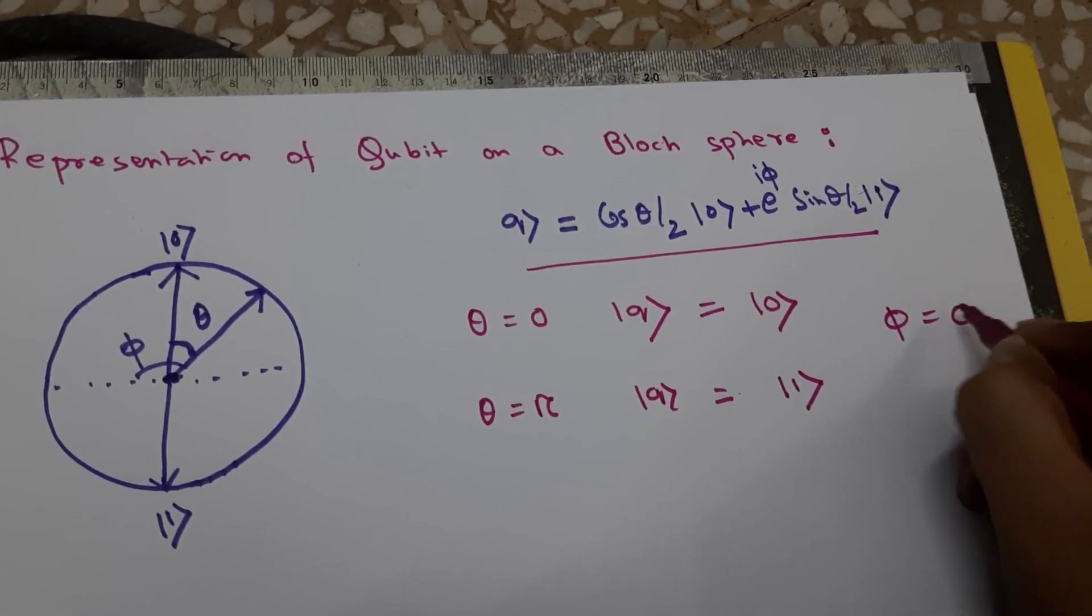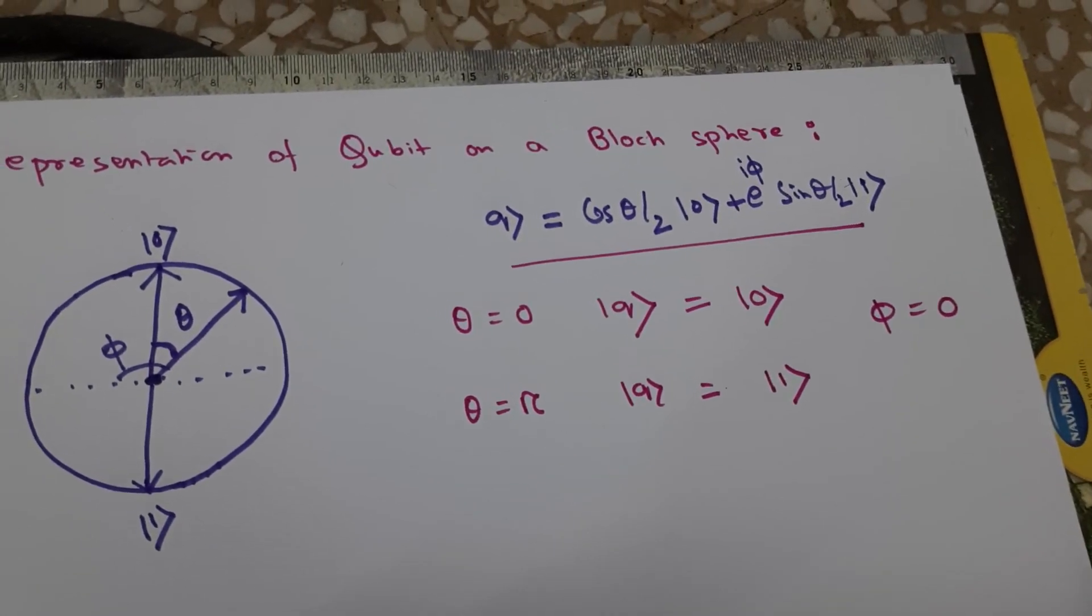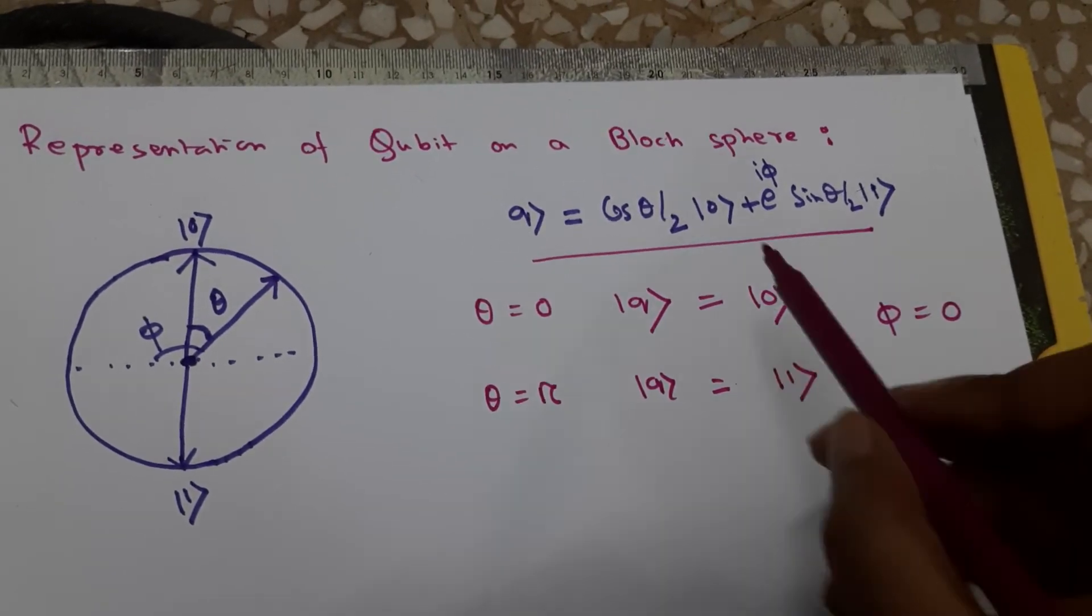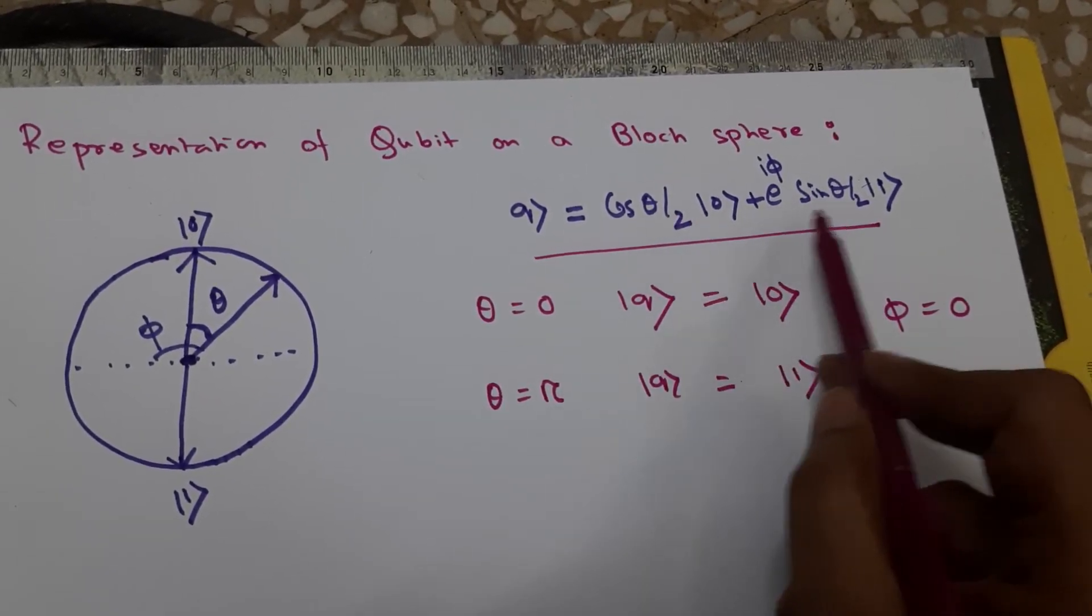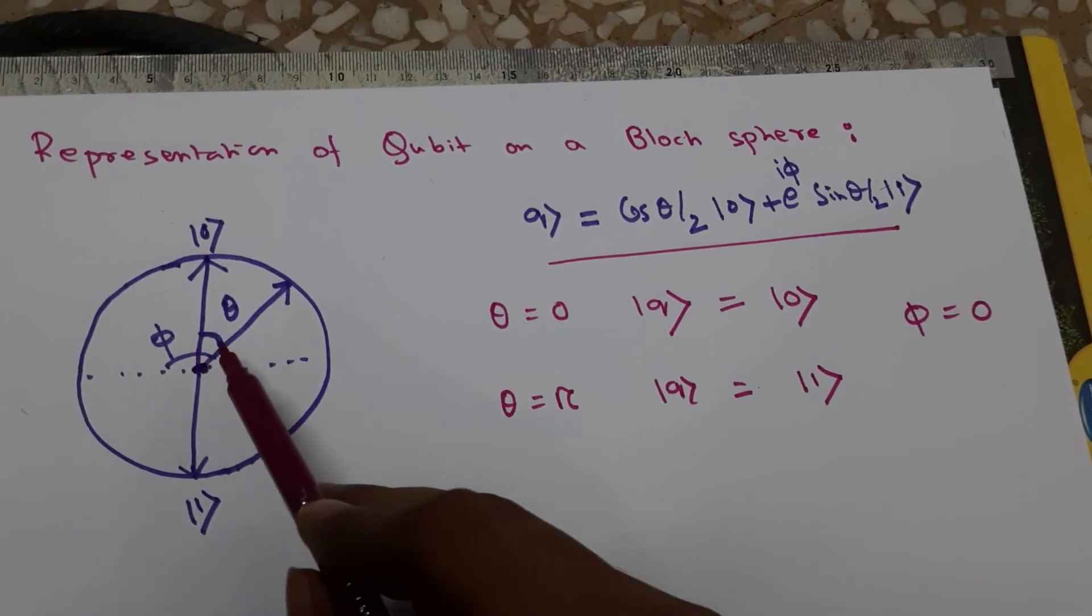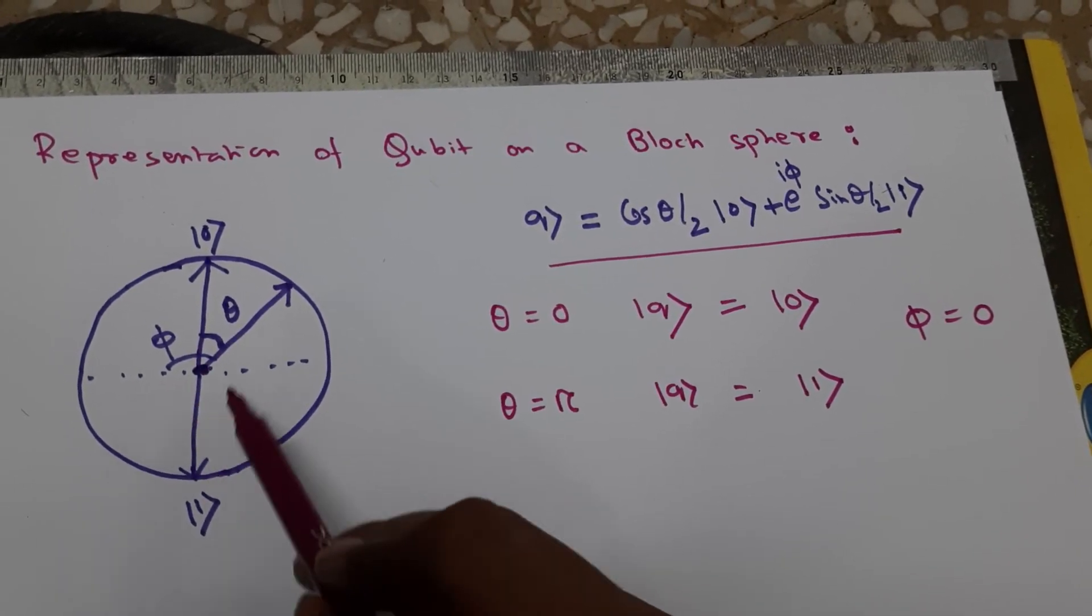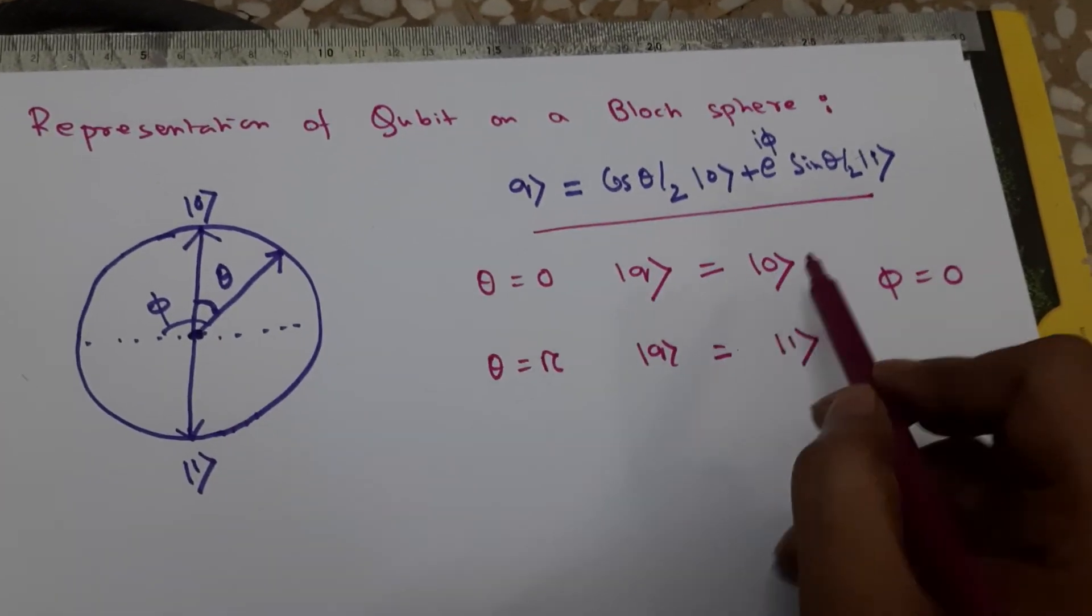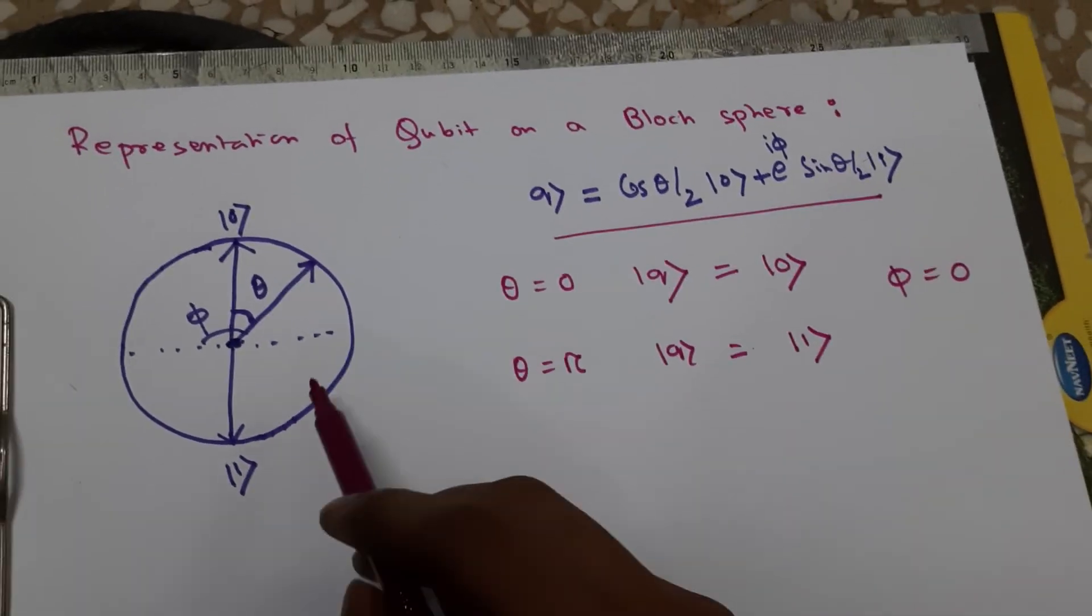If theta is pi, then it is pi/2, so this term is 0 and this is pi/2 which equals 1, so this collapses to |1⟩. Here we are considering phi to be 0. By changing this angle, we can successfully get our classical bits separately, so this representation is perfectly fine.